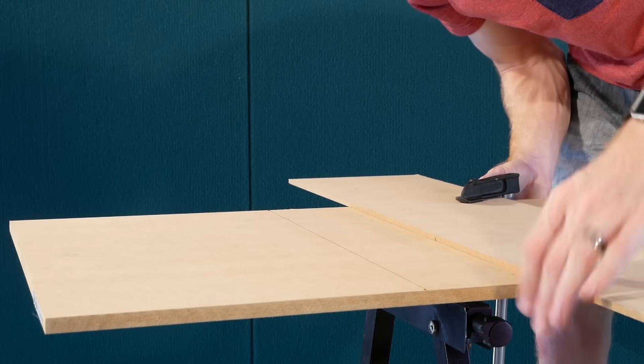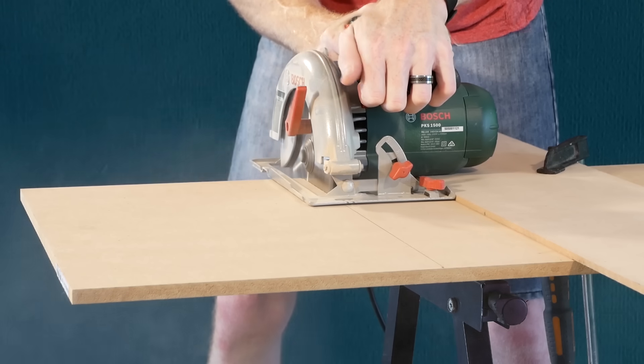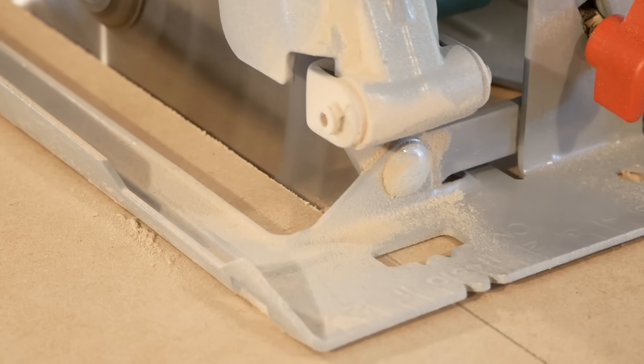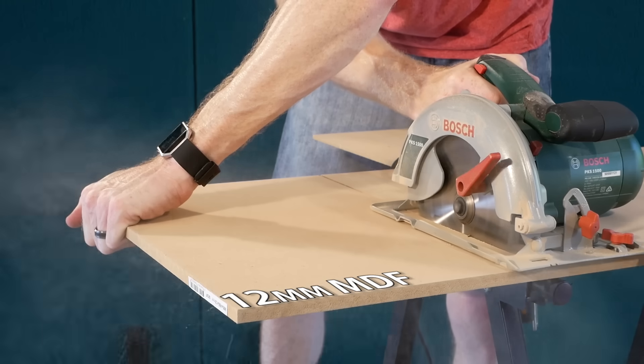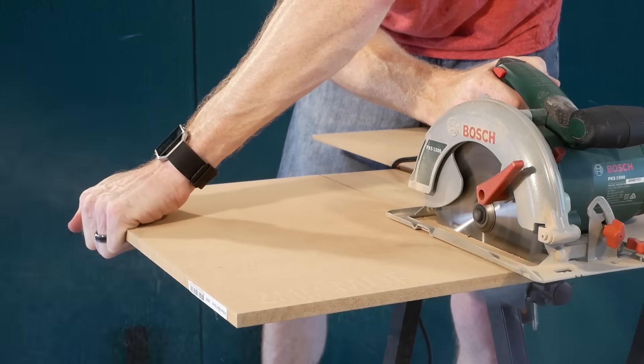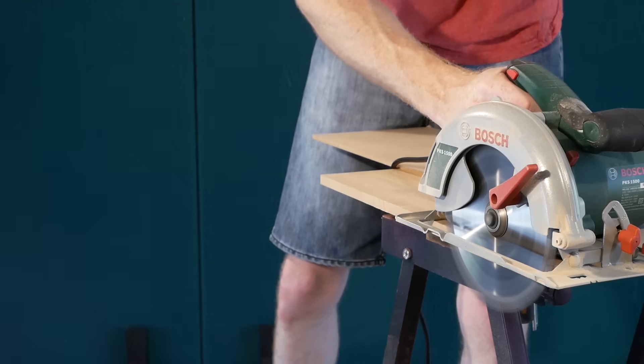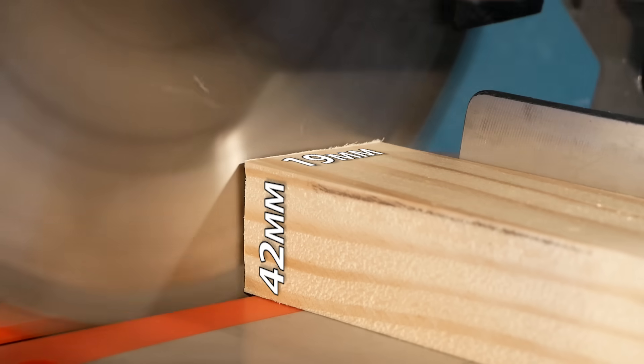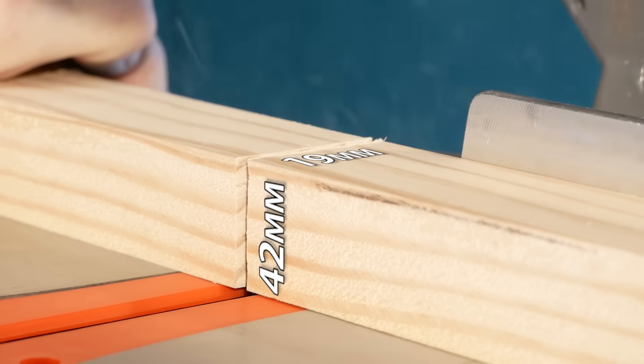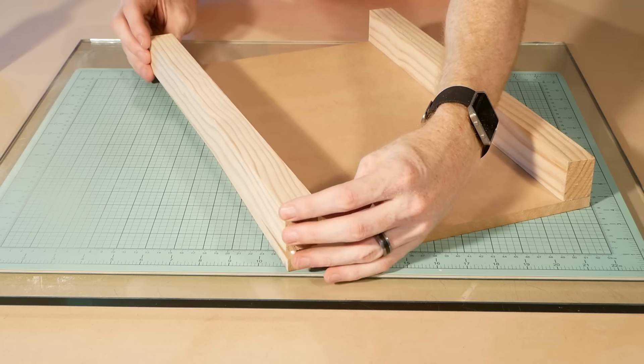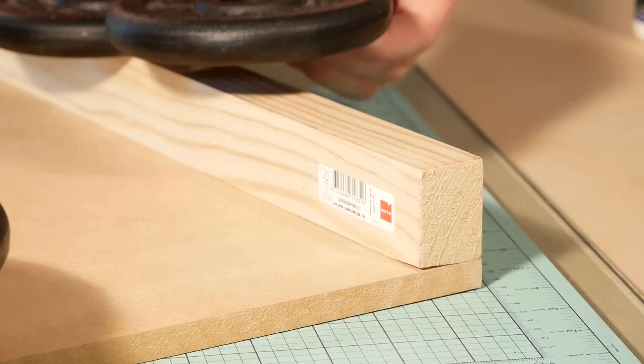It'll also need to be strong and sturdy in order to resist flexing whilst we are using the cutter. I went with a 12mm thick piece of MDF for the main surface. The sides are made using 19x42mm pine and simply glued into position with wood glue and weighed down as the glue dries.